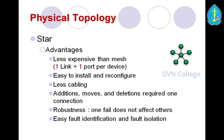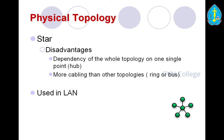Star topology disadvantages: dependency of the whole topology on one single point — the hub — if the hub fails the entire network fails. More cabling is required than ring or bus topologies. Star topology is mainly used in LAN — local area network.